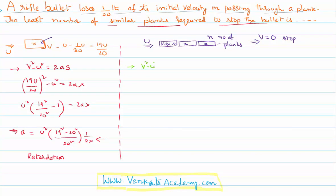I will again apply the same rule between the starting and ending point. Same formula: v² - u² = 2as, then v² is zero. Starting right from the beginning, I am calculating u². But I have already calculated the value of a, I will substitute this value. a is u² × (19² - 20²)/(20² × 2x). This is all the value of a and s is there.